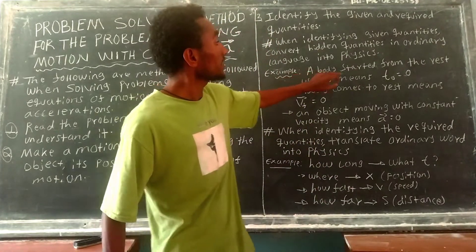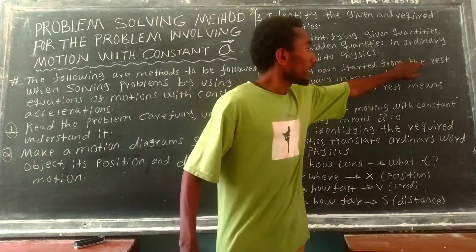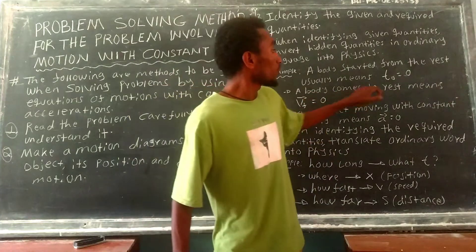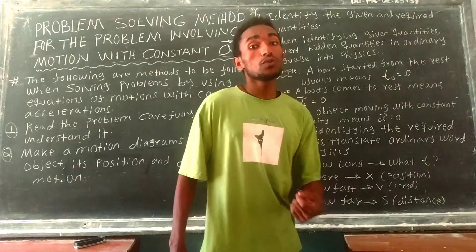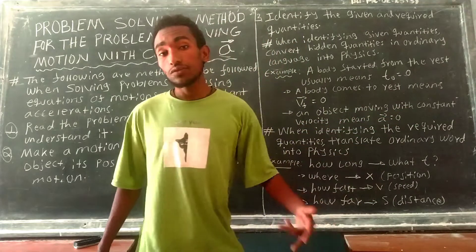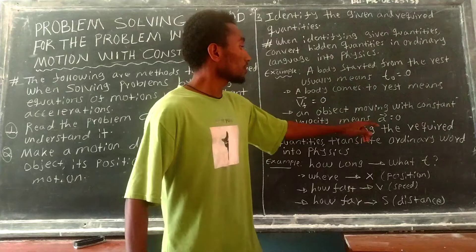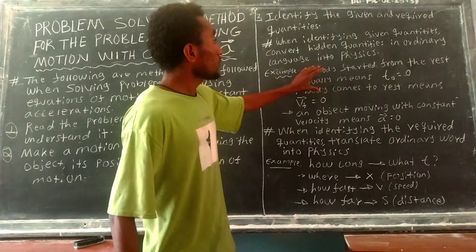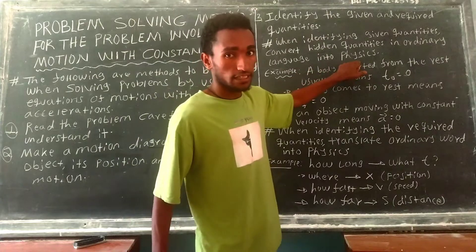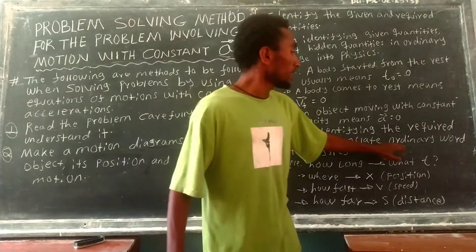For example, 'the body started from rest' means the initial velocity is zero. 'The body comes to rest' means the final velocity is zero. 'An object moving at constant speed' means the acceleration is zero.